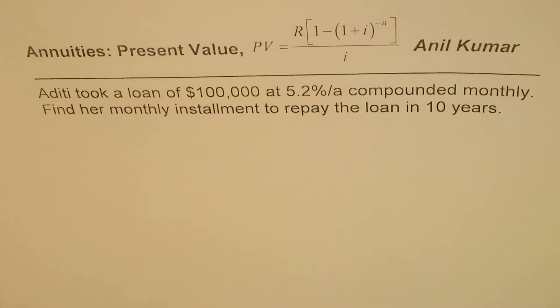I'm Anil Kumar sharing with you an annuities present value example. The question here is: Aditi took a loan of $100,000 at 5.2% per annum compounded monthly. Find her monthly installment to repay the loan in 10 years.